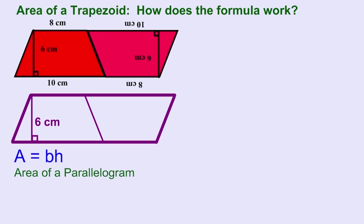Our height is still 6, but now our base is actually 18 because we're adding 8 centimeters and 10 centimeters. So both bases are 18. So if I multiply 6 times 18, I would get 108.